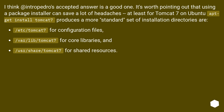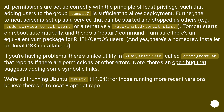The accepted answer is a good one. It's worth pointing out that using a package installer can save a lot of headaches, at least for Tomcat 7 on Ubuntu. Running apt-get install tomcat7 produces a more standard set of installation directories. All permissions are set up correctly with the principle of least privilege, such that adding users to the group tomcat7 is sufficient to allow deployment. The Tomcat server is set up as a service that can be started and stopped, for example with sudo service tomcat start or /etc/init.d/tomcat start.